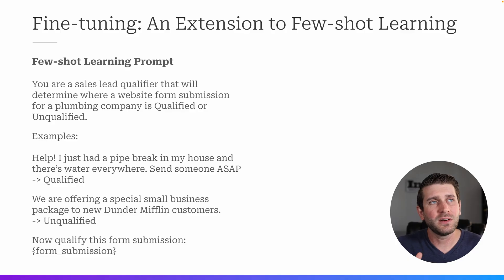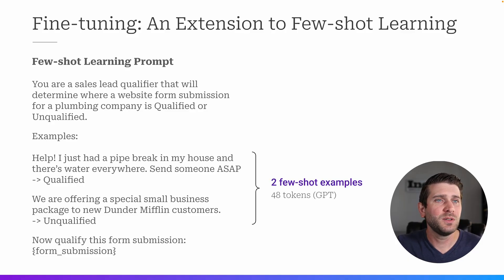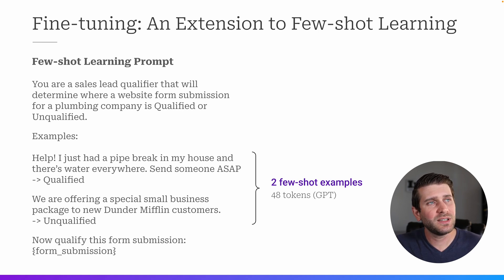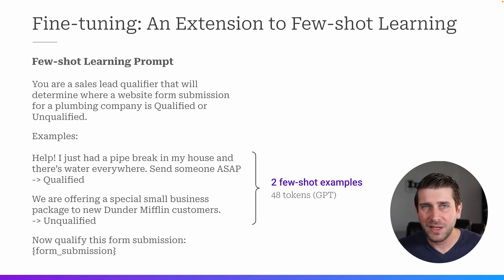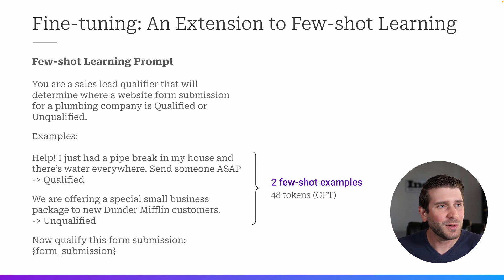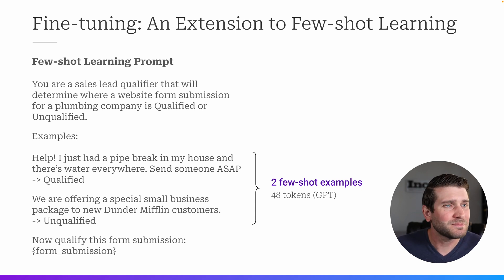I mentioned fine-tuning as an extension to few-shot learning. Here's an example of few-shot learning in a prompt with two examples, which adds up to 48 tokens for every request. This is a sales lead qualifier — trying to decide if an inquiry from a marketing form is qualified or unqualified. 'Help, I just had a pipe break in my house and there's water everywhere — send someone ASAP.' This is probably a pretty good lead; they definitely need someone and are probably willing to pay. 'Someone offering a small business package to new customers' — that sounds like spam, so: unqualified.